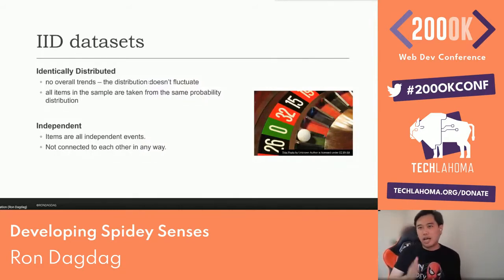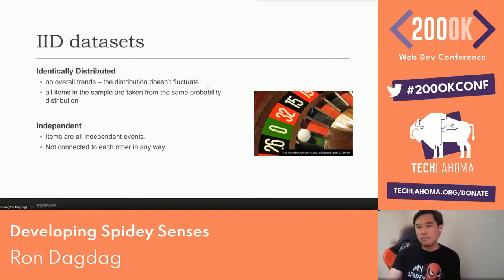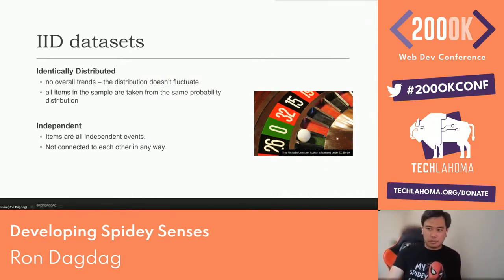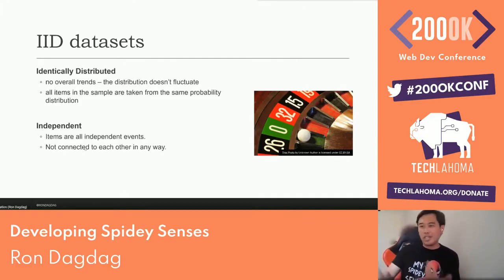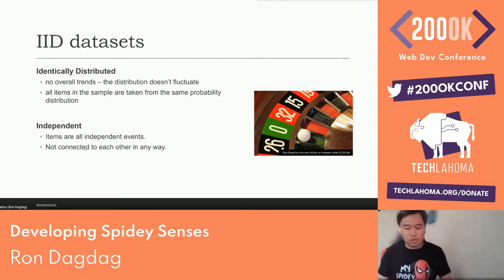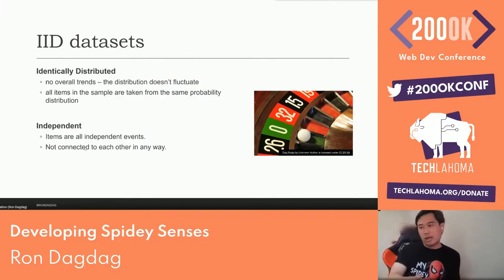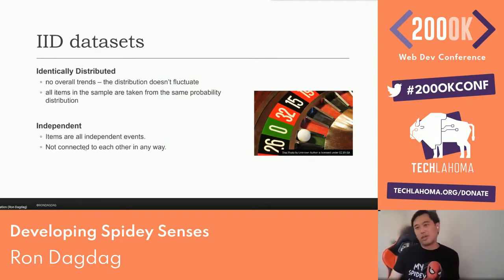When doing anomaly detection with time series data, you'll hear about IID data sets — identically distributed and independent. Identically distributed means the distribution doesn't fluctuate and comes from the same probability distribution. Independent means each data point is not dependent on the previous one — like reading a temperature sensor, adding it to your database, reading again, and adding again. Each reading is independent from the others.